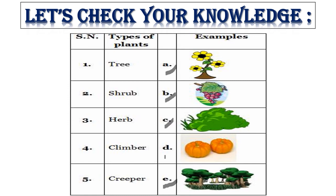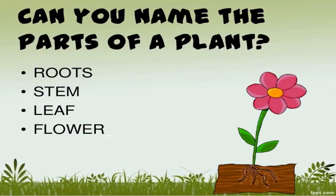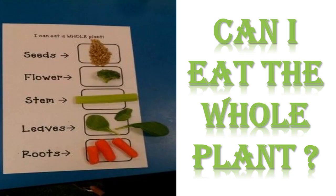Let us check you further — can you name the parts of the plant? These are roots. Now which part is stem? This is stem. Coming to the next, leaf. This is leaf. Coming to the next, flower. This is flower. So now you are able to identify the parts of the plant.